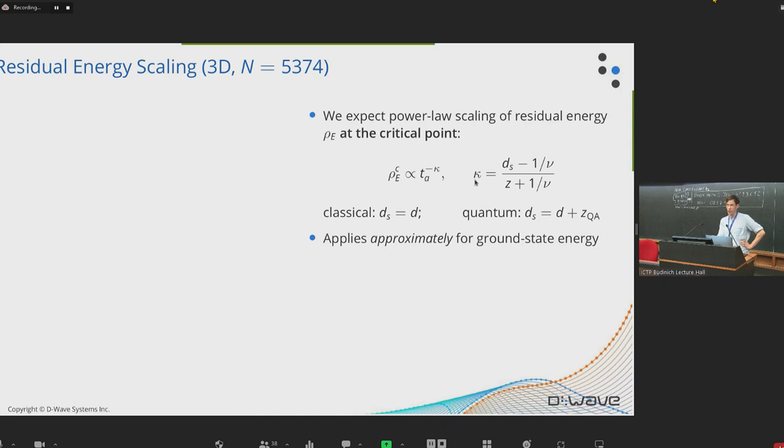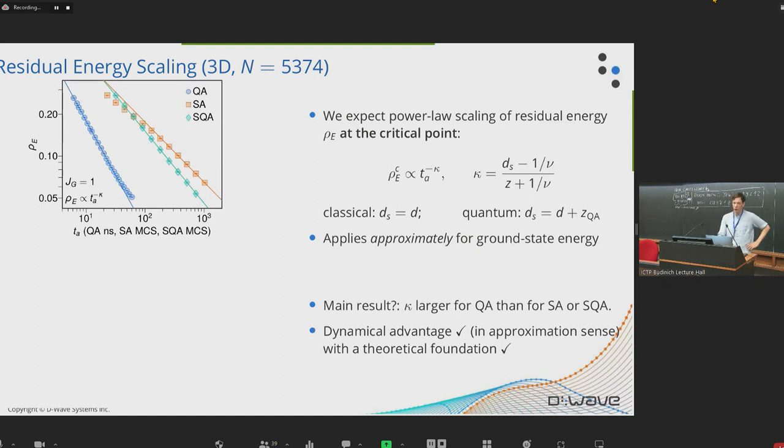So in my view, in terms of practicality, it's more important to have a polynomial speed-up in an approximation sense. So Mohamed talked about this exponent. He called it X, but I call it kappa. And we have certain theoretical expectations based on the theory of critical phenomena around the phase transition of how the residual energy should scale. And it's a bit complicated. So we have this space-time dimension, which is D plus Z for the quantum system and D for the classical system. That hardly seems fair, but that's why we're doing this, I guess. And then we want to look at which solver has the bigger kappa. And so this is all around the critical point, but it actually applies approximately for ground state energy, both in theory and in experiment. So if we look at quantum annealing, simulated annealing, and simulated quantum annealing again, we can do power law fits.